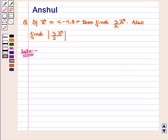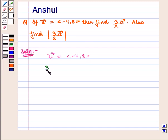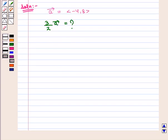In this question we are given vector A in component form, i.e. vector A is equal to the ordered pair (-4, 8), and we have to find 3/2 into vector A. Here we have to multiply the given vector with scalar 3/2.